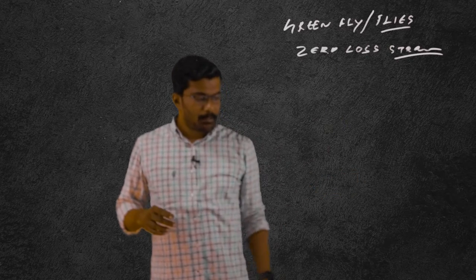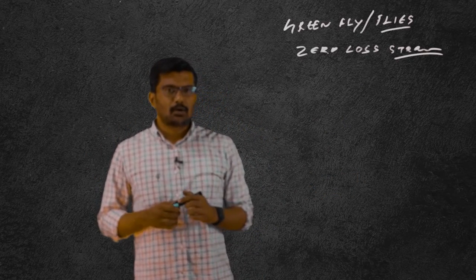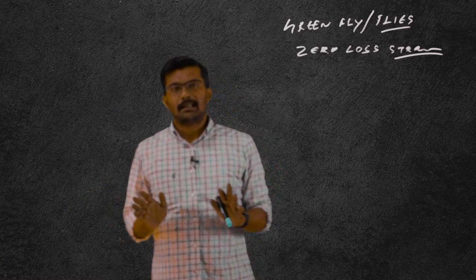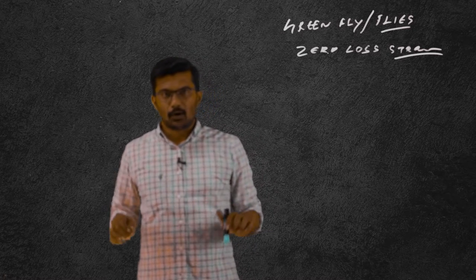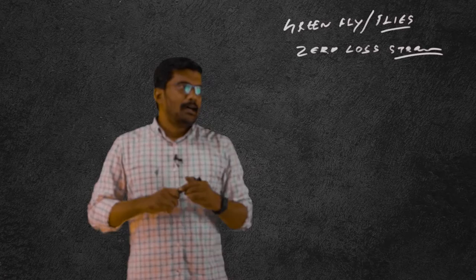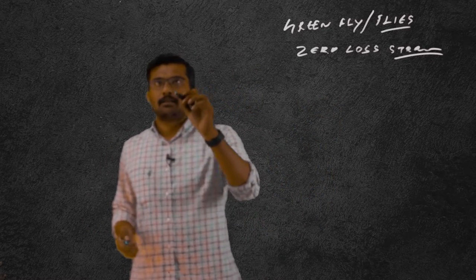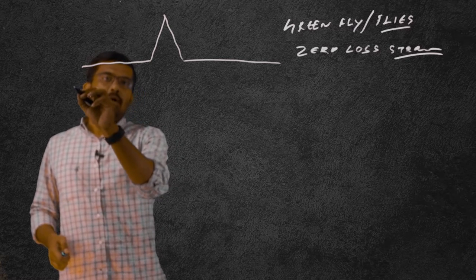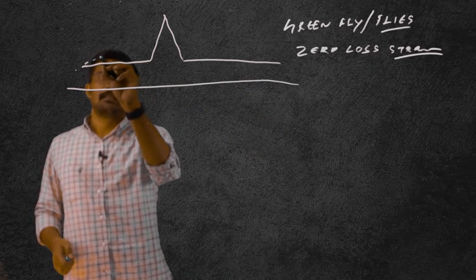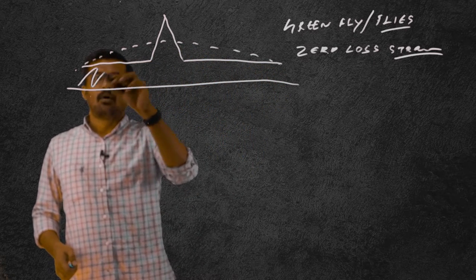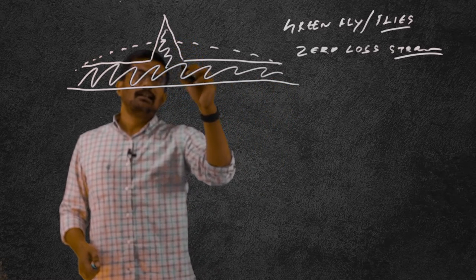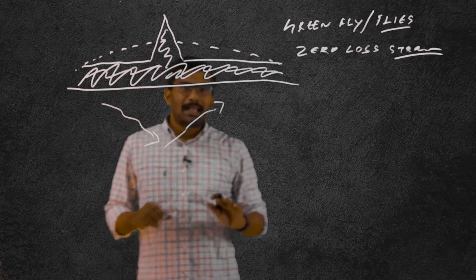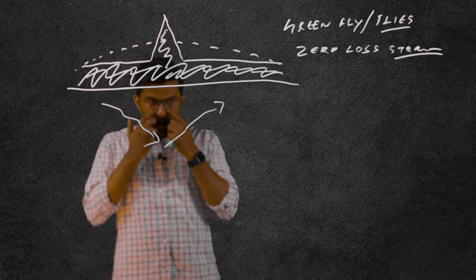What is a green fly or zero loss strategy? If nifty hypothetically goes to zero, you don't make any losses. Or if nifty goes to 50,000, you don't make any losses. Let me construct a simple zero loss strategy. This is your payoff graph — the blue line is above the breakeven line. All this area is in the green, whether the market comes down or goes up, you don't make any losses at all. This is called zero loss strategy.